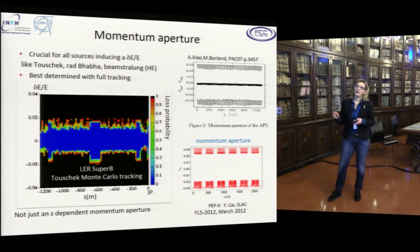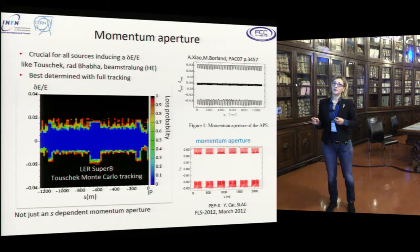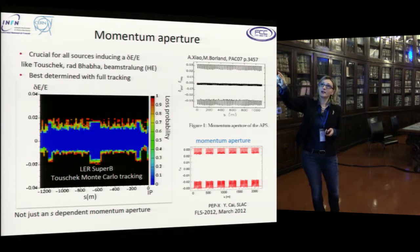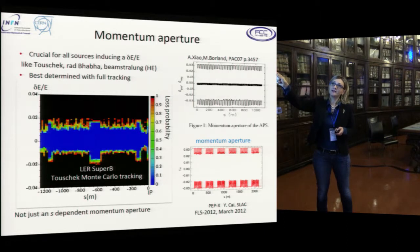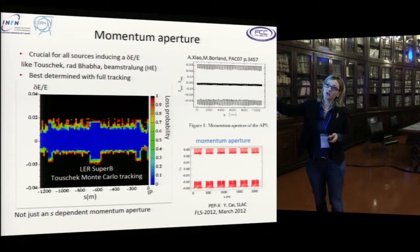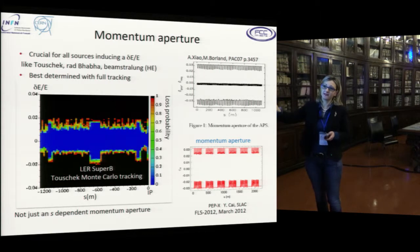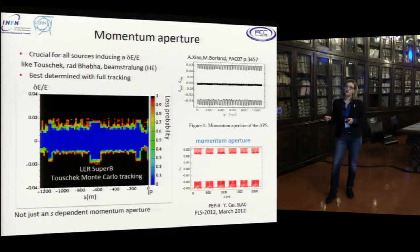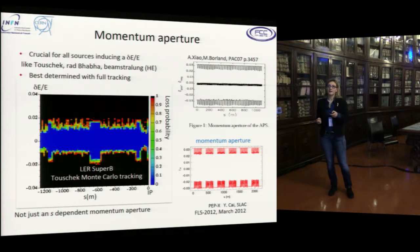This shows how important the momentum aperture is for beam loss effects. It is crucial for all sources inducing a delta-E over E, such as Touschek, radiative Bhabha, and beam-strahlung at high energy, and is best determined with full tracking. This is an example of how the Monte Carlo for the two-photon effect works — for each longitudinal position we have not only the delta-E over E but also the loss probability. This goes beyond a simple s-dependent momentum aperture plot, requiring careful tracking for full simulation of particle losses.